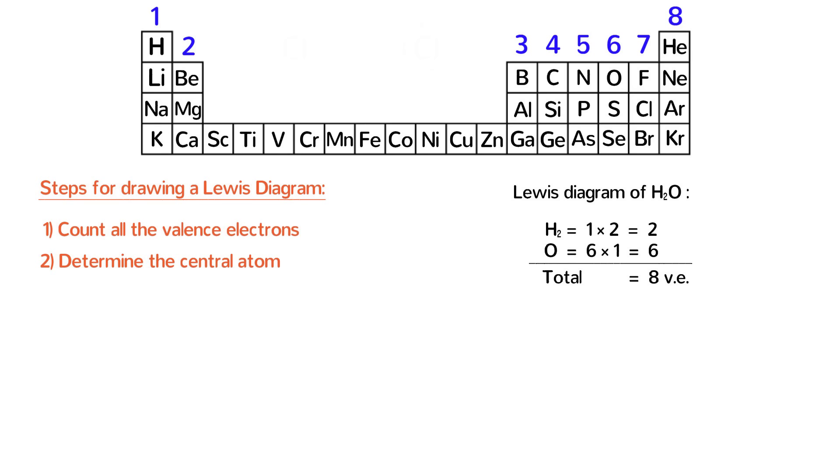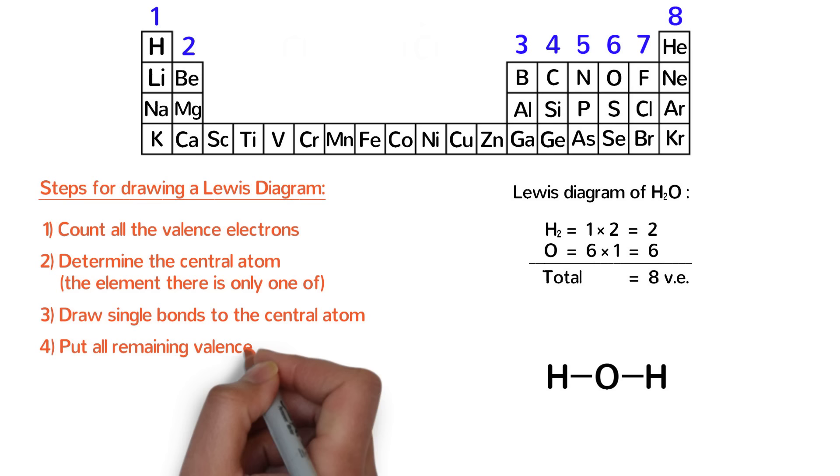Step 2. Determine the central atom. The central atom is the one that all the other atoms will be bonded to. It is usually the element that there is only one of. In the case of H2O, because there are two hydrogens and only one oxygen, we choose oxygen as the central atom and write it in the middle. Step 3. Draw single bonds to the central atom.